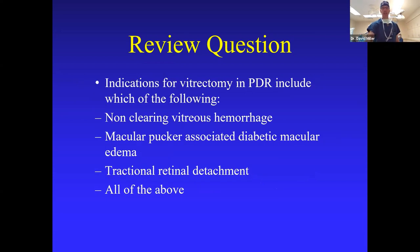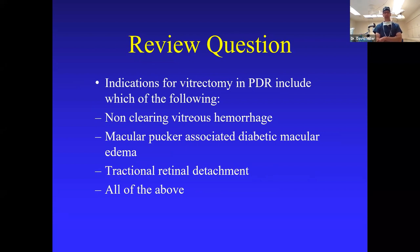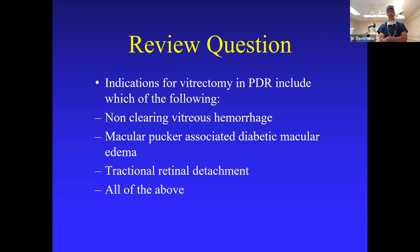Indications for vitrectomy in proliferative diabetic retinopathy — which of the following? Non-clearing vitreous hemorrhage, macular pucker, associated diabetic macular edema, tractional retinal detachment, or all of the above? When most people think of proliferative diabetic retinopathy, they think of vitreous hemorrhage and vitreous opacity, but other choices are possible also. All of the above seems to be by far the number one choice of the audience.